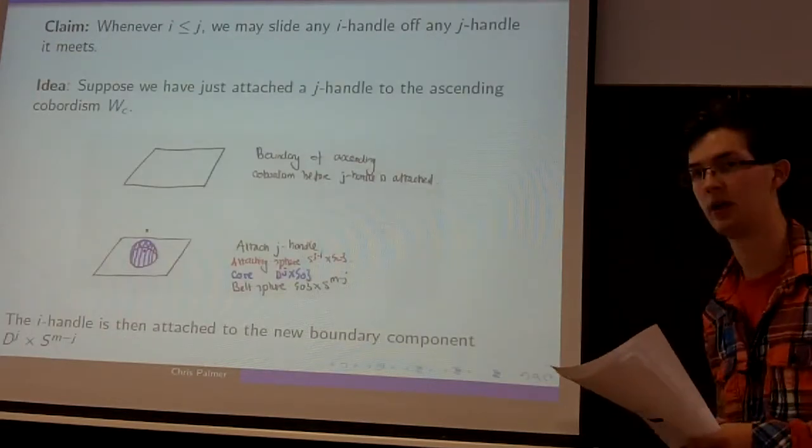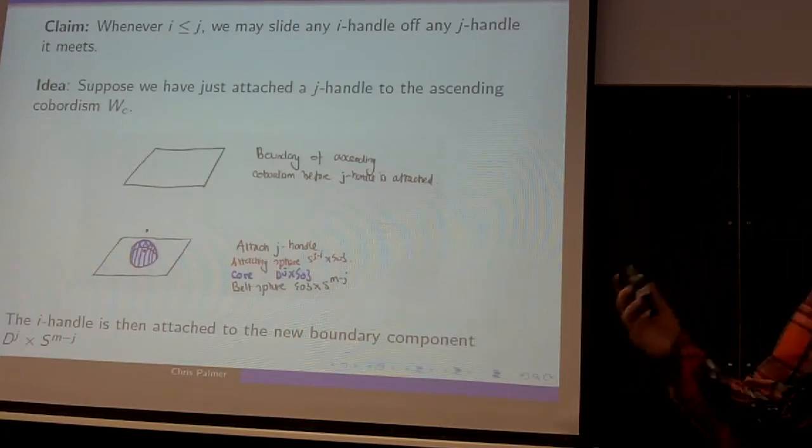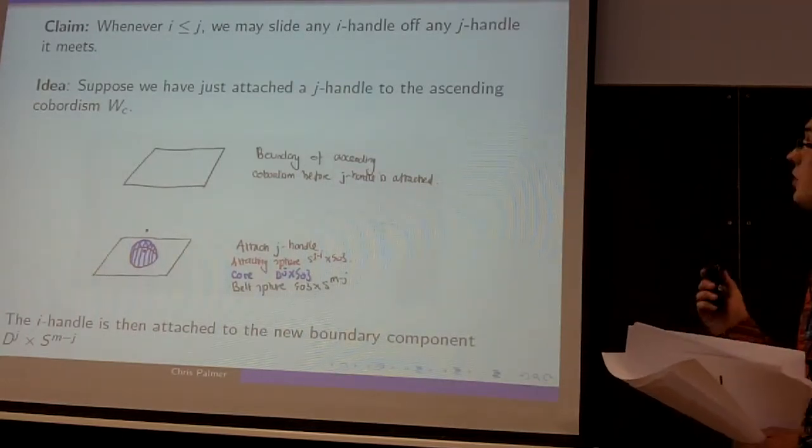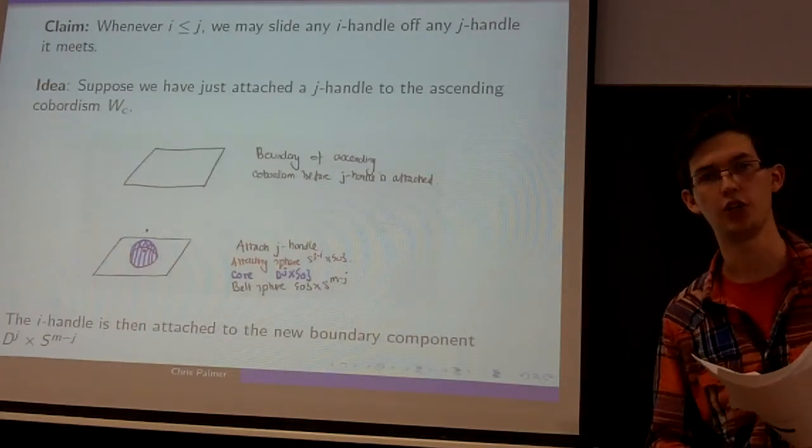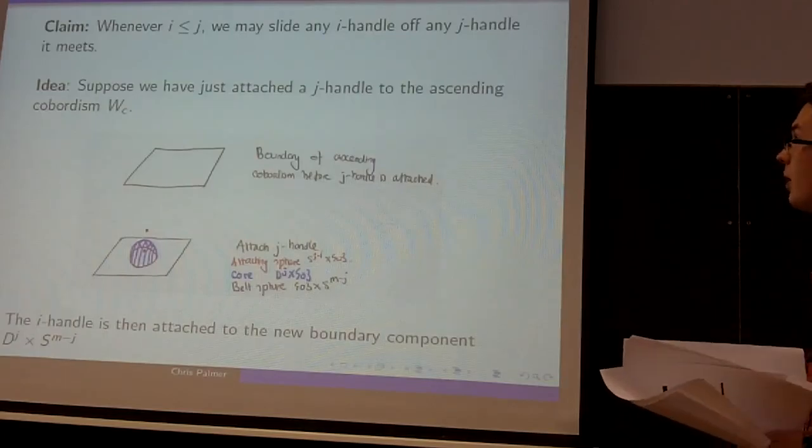There's a slightly different way of doing this. Suppose we have the following situation: we've attached a j-handle to some ascending cobordism, then we've attached an i-handle on top where i is less than or equal to j. The idea is we want to slide the i-handle off the j-handle in order to consider the i-handle to be attached before the j-handle is attached.